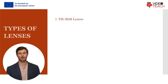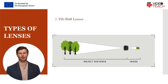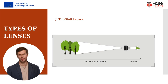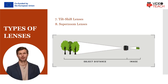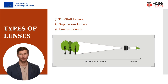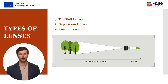Tilt-shift lenses allow photographers to control the orientation of the lens relative to the image sensor, enabling creative manipulation of perspective and focus. They are often used in architectural and product photography. Superzoom lenses have an extensive focal length range, typically covering both wide-angle and telephoto perspectives. While convenient for versatility, superzoom lenses may sacrifice some image quality compared to prime or standard zoom lenses. Cinema lenses are designed specifically for video production, and often have features like geared focus rings for precise manual focusing, de-clicked apertures for smooth exposure adjustments, and consistent gear placement for follow focus systems.